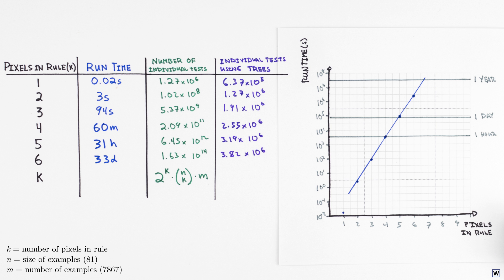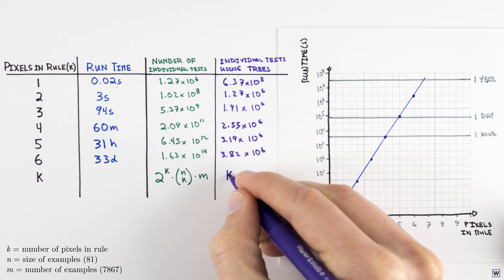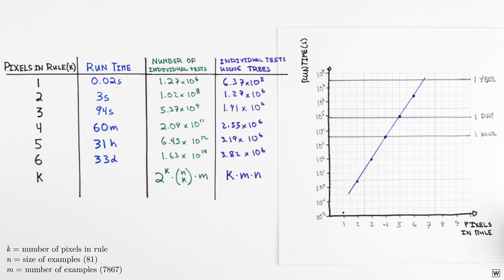And what's even more incredible here is that the time to train a decision tree will grow only linearly in terms of the size of our examples, the number of pixels in our rule, and the number of examples in our training set. This means that as the size of our problem increases, decision trees remain a viable solution, and offer even more dramatic speed ups over our intractable brute force approach.